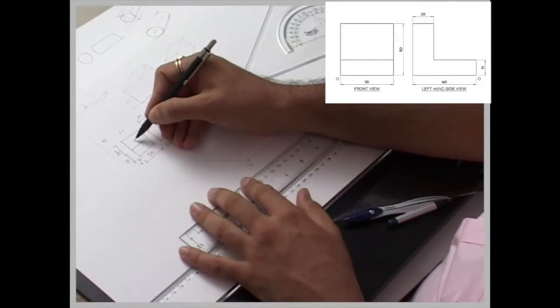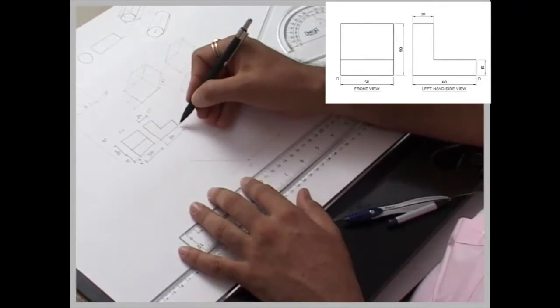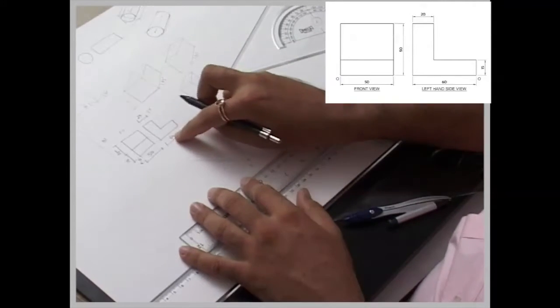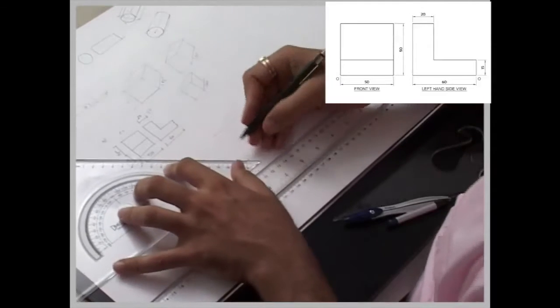Now they have given these two views. Like see, surface number 1 and surface number 2. If you see side view, they have given it one full view. How much is this width? 60. So we will take 60.